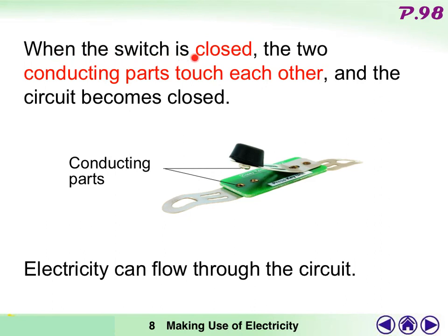When a switch is closed, the two conducting parts touch each other. And the circuit becomes closed. Here are the conducting parts. When a switch is closed, electricity can flow through the circuit.